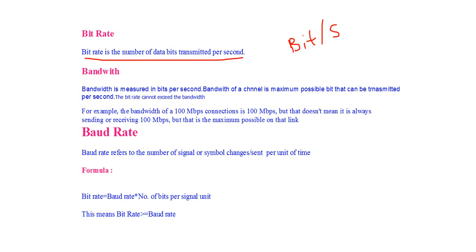Now bandwidth. Bandwidth is measured in bits per second. The bandwidth of a channel is the maximum possible number of bits that can be transmitted per second. So bandwidth is actually measured in terms of bit rate.